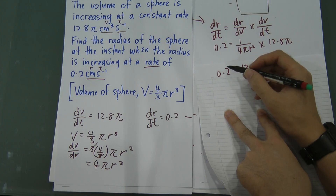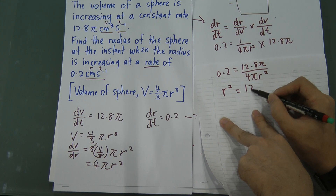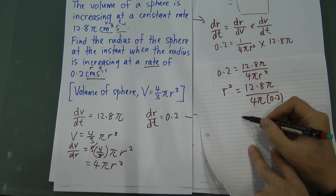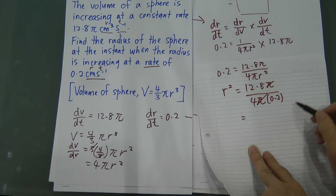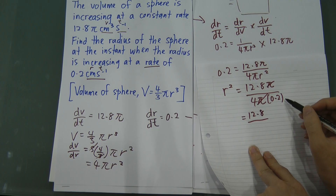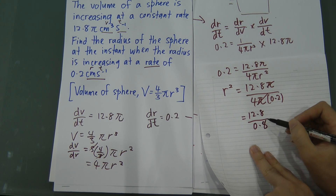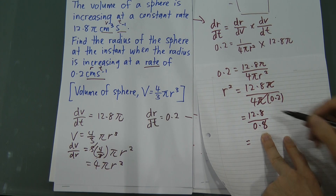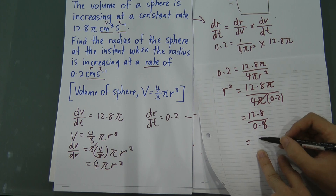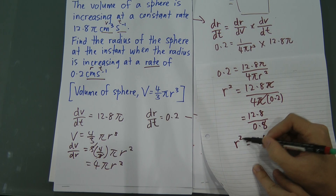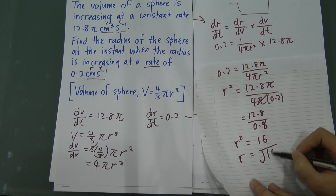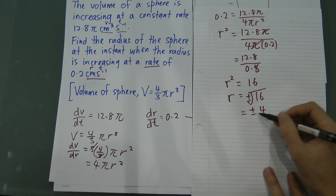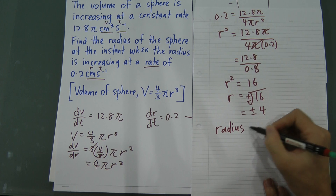Rearranging: R² equals 12.8π divided by (4π × 0.2). The π cancels, and 12.8 divided by (4 × 0.2) equals 12.8 divided by 0.8, which gives 16. So R² equals 16, meaning R equals the square root of 16, which is positive or negative 4. Since R is a radius, we only take the positive value. Therefore the radius equals 4 centimetres.